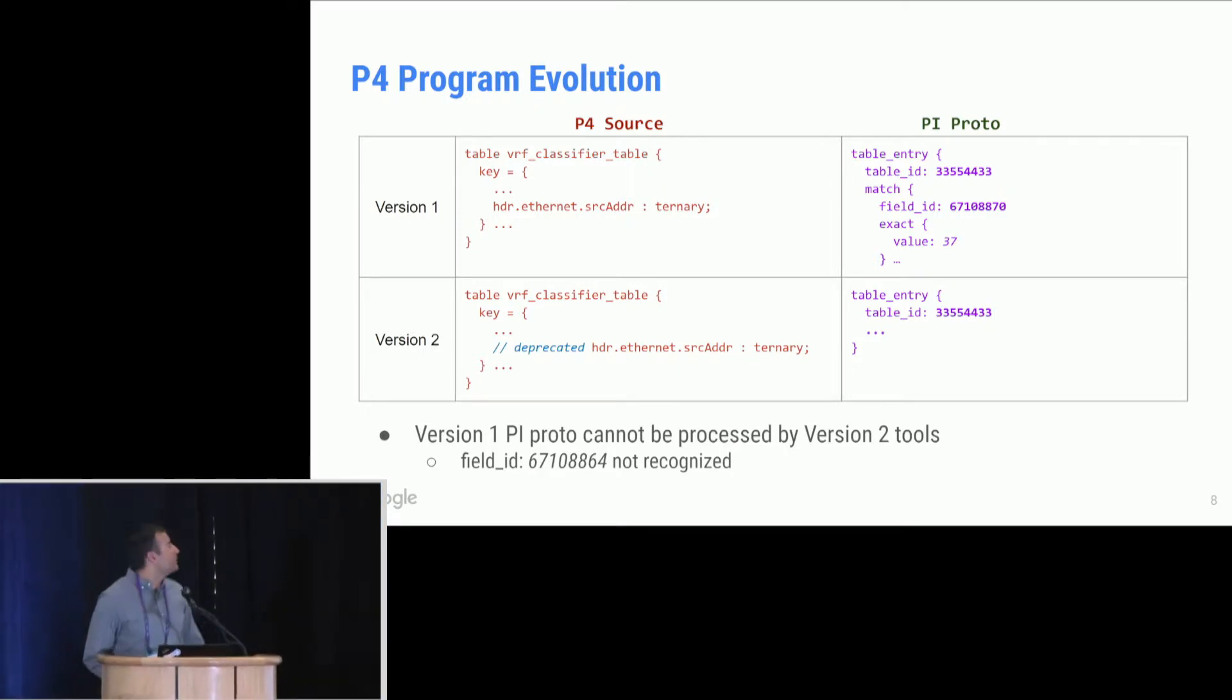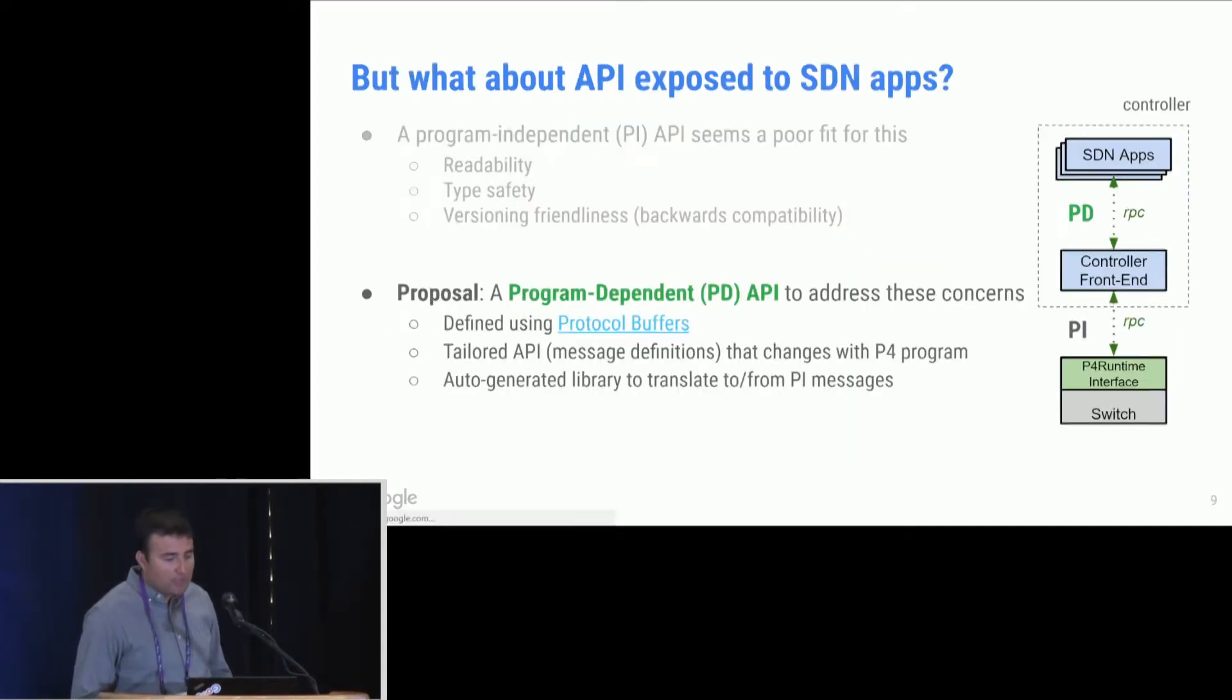Thank you, Vukal. So in order to address these three issues, readability, type safety, and evolution of the P4 program, we are proposing a program-dependent API that we want to expose between the SDN apps and the controller front end. The RPC mechanism is still there, but essentially the controller front end is exposing a program-dependent service which can be used by SDN apps. We still use protocol buffers to define the schema for these program-dependent API, just like we do for the PI API. But the difference is now that, as the name implies, as your P4 program evolves and changes, this schema and the API also changes with it.